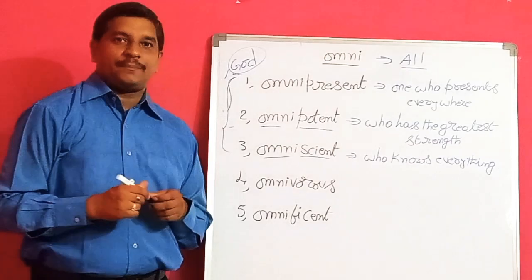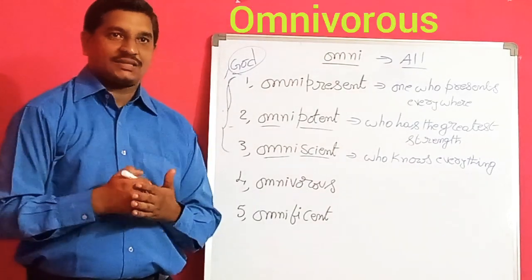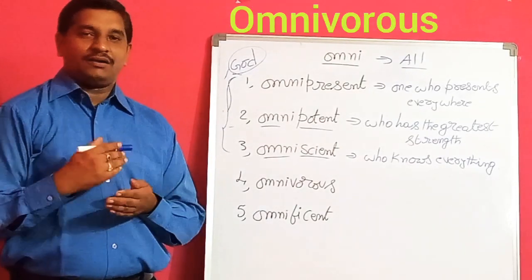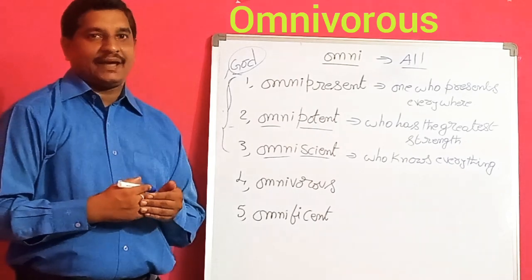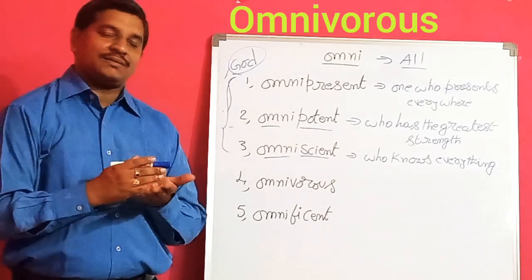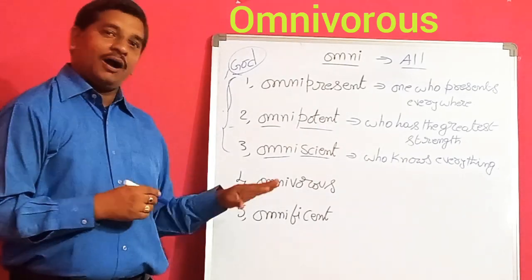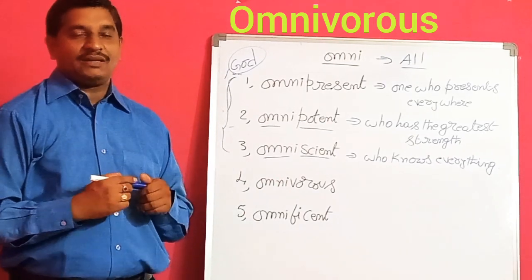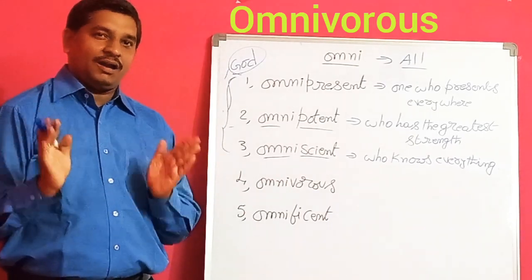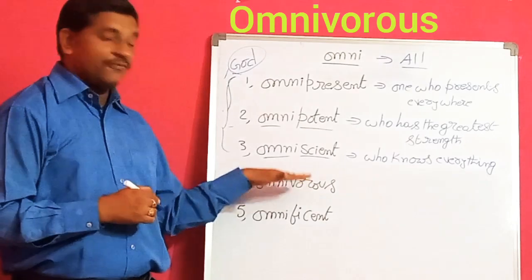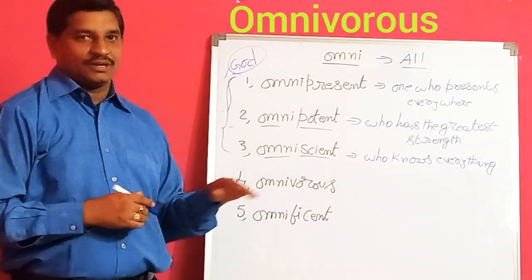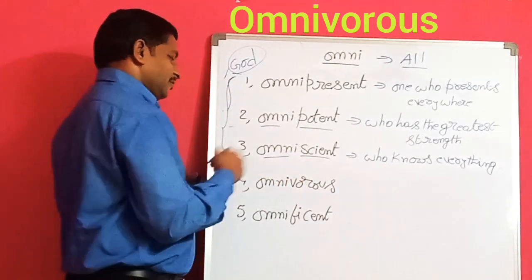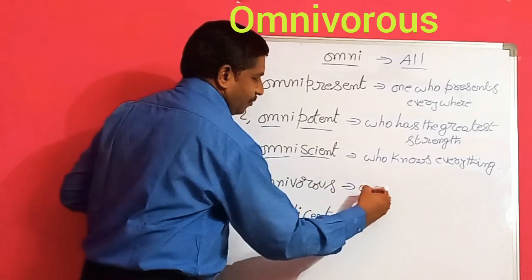Next, omnivorous. In the previous classes we discussed the words vore, which means to live on or to eat. Some animals are vegetarian, some are non-vegetarian, but omnivorous animals eat all kinds of food.